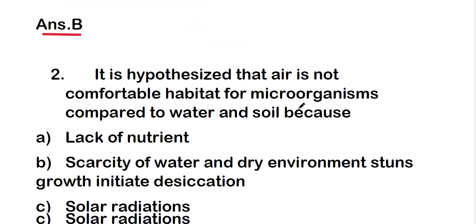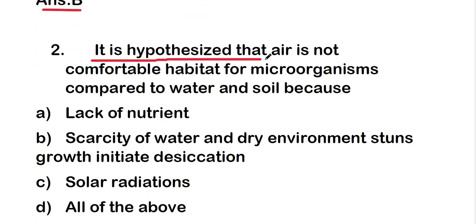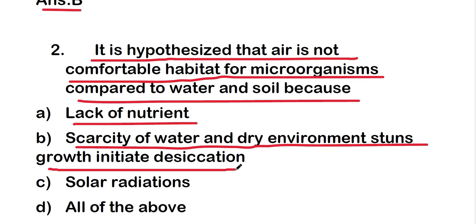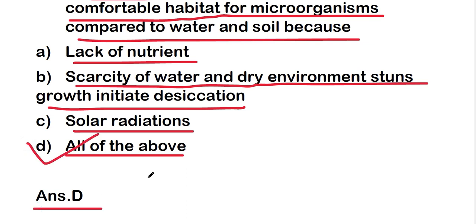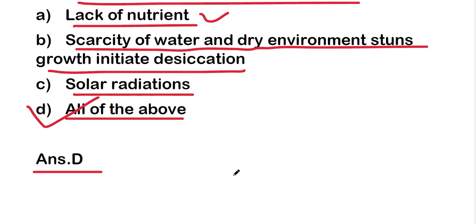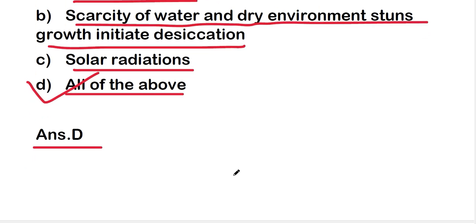Next question: it is hypothesized that air is not a comfortable habitat for microorganisms compared to water and soil because of — lack of nutrients, scarcity of water and dry environments that inhibit growth and initiate desiccation, solar radiations, or all of the above? The right answer is option D, all of the above. All these factors are responsible for fewer microorganisms growing in air.